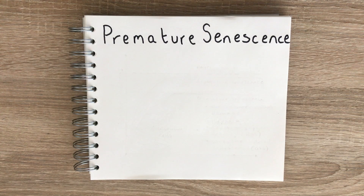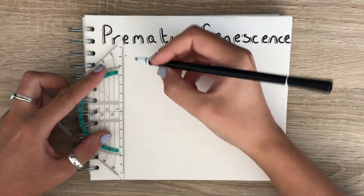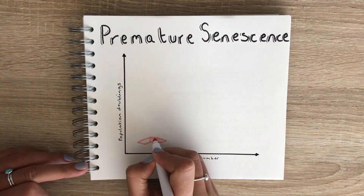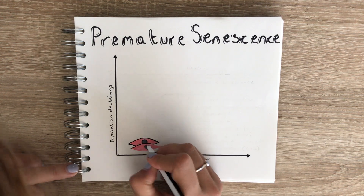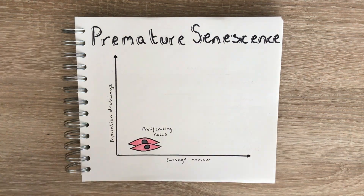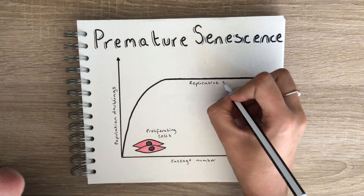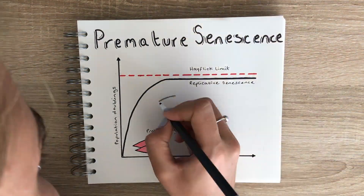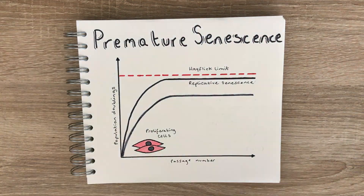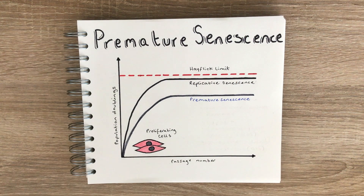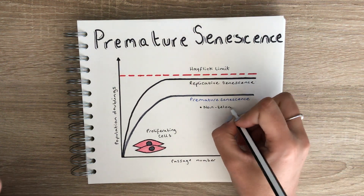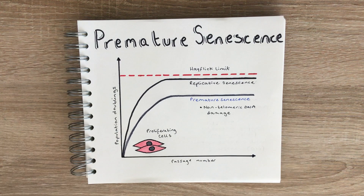As well as replicative senescence, which occurs when cells reach their proliferative capacity known as the Hayflick limit, senescence can also be induced by a variety of different stimuli without any detectable telomere erosion. In this case it is known as premature senescence. Other types of non-telomeric DNA damage, such as single-stranded or double-stranded DNA breaks, can also induce senescence, likely through the DNA damage response in a similar manner to telomere erosion.